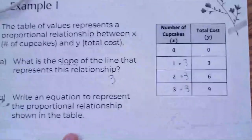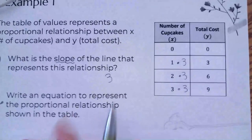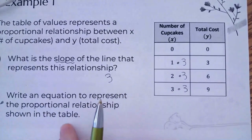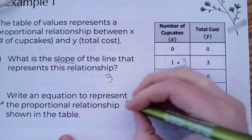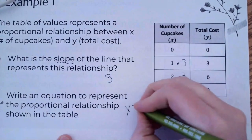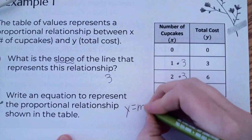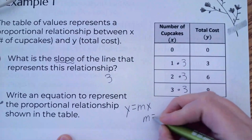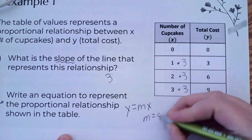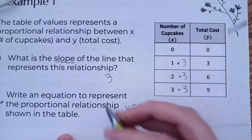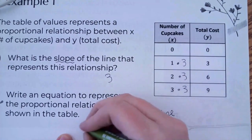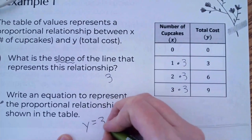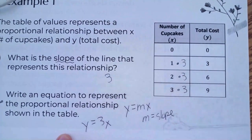The next thing we're going to do is write an equation to represent the proportional relationship shown in the table. Remember, our formula is y equals mx, where m equals slope. So if our slope is 3, our formula is y equals 3x.